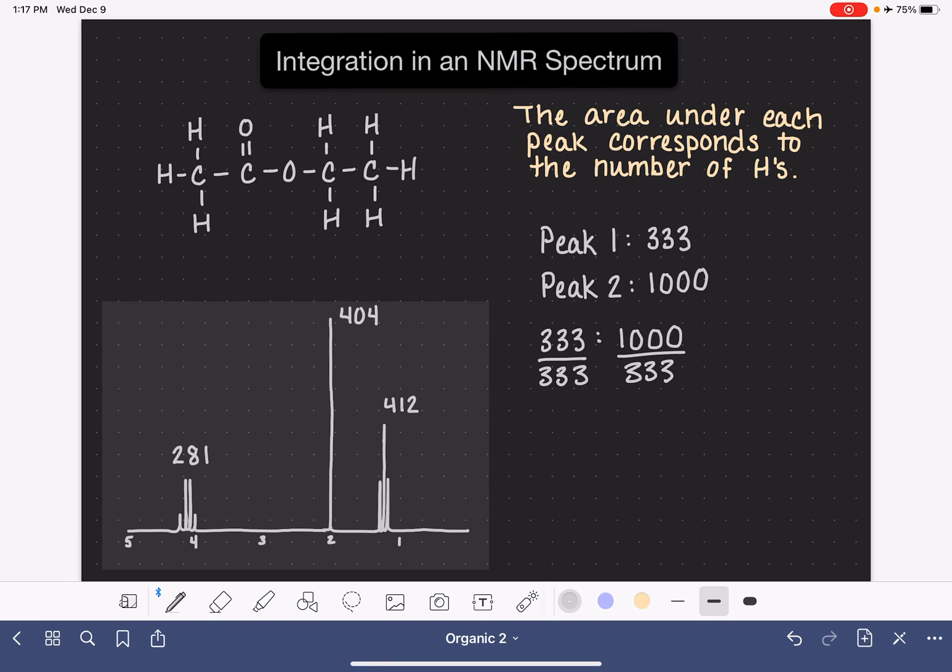Our goal is to reduce this ratio down to something that makes more sense in terms of how many hydrogen atoms we would expect in a molecule. When we divide everything by 333, we end up getting a ratio that works out pretty perfect. Basically it's 1 to 3.00. This is telling us that peak number one is associated with one hydrogen atom and peak number two is associated with three hydrogen atoms.